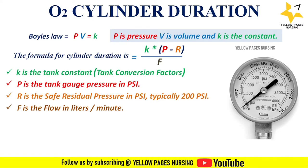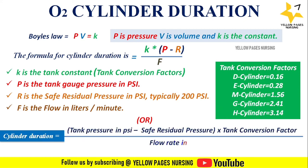We have one more formula to calculate the cylinder duration: tank pressure in PSI minus safe residual pressure, multiplied by the tank conversion factor, divided by the flow rate in liters per minute. You can use any of these formulas to calculate the cylinder duration. Let's have a look at an example so that you can clearly understand.